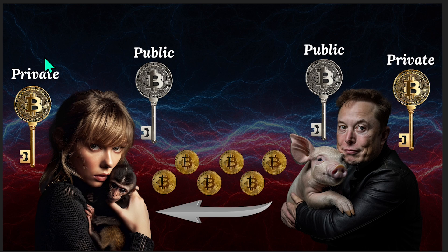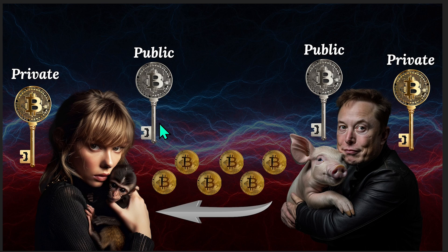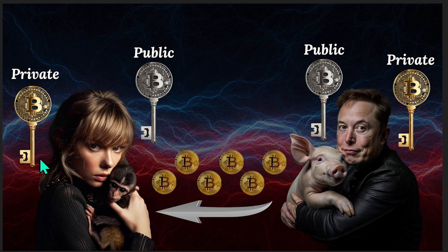In order to spend this Bitcoin, Taylor would actually need her private key to sign any future transactions. That would include transferring the Bitcoin to an online exchange like Coinbase and then converting it to US dollars, or if she wants to send the five Bitcoin to one of her many exes to thank them for inspiring her music. The private key is never shared or transmitted, so it can't be stolen during the transaction, and the signature verifies the sender's authority without exposing the private key.